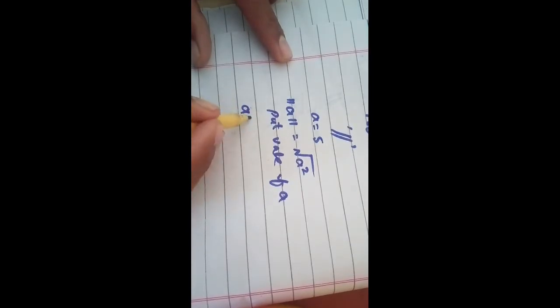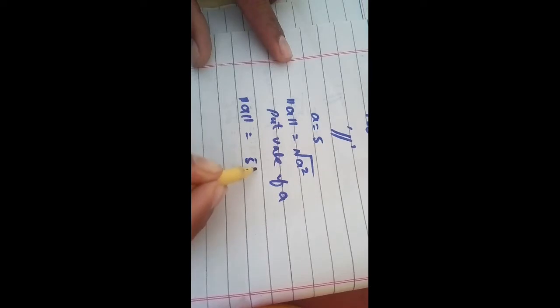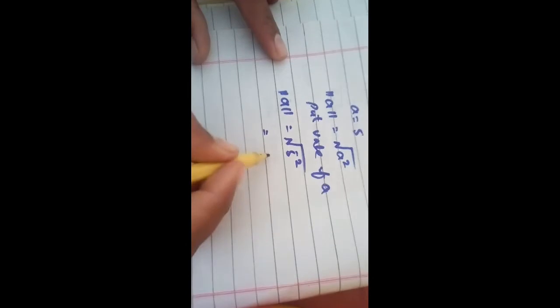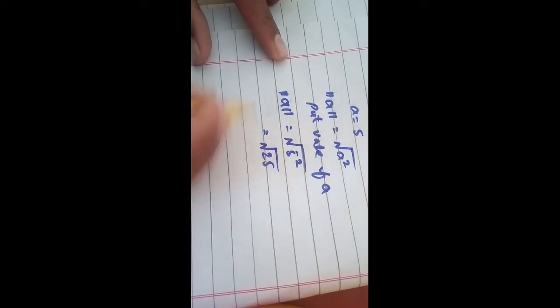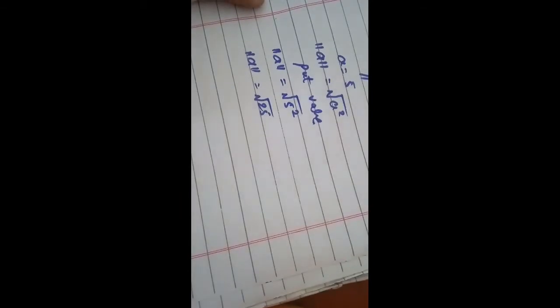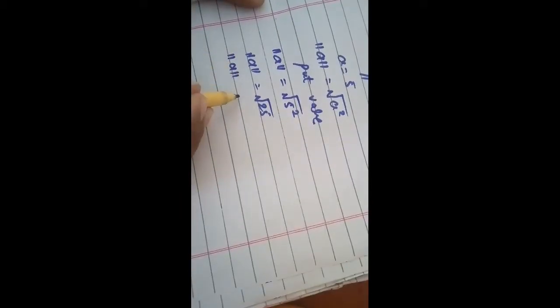putting value in a, it will become 5 square and under root. After calculating square, it will become 25 and under root in this side and a norm, so after calculation